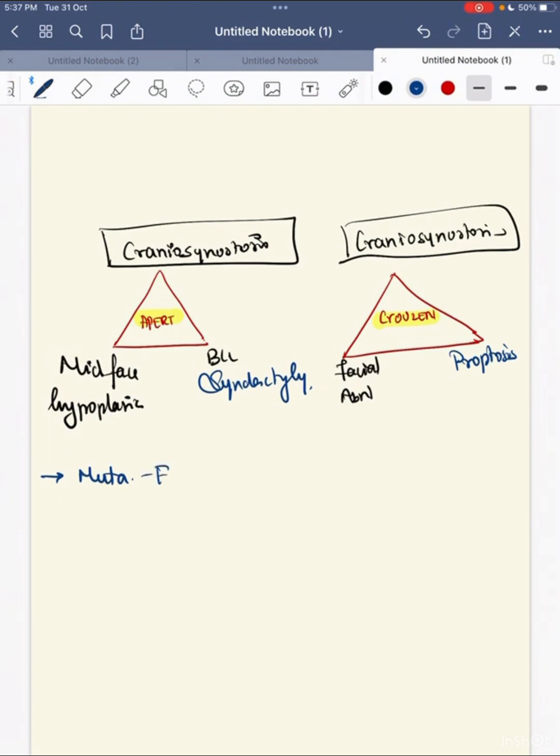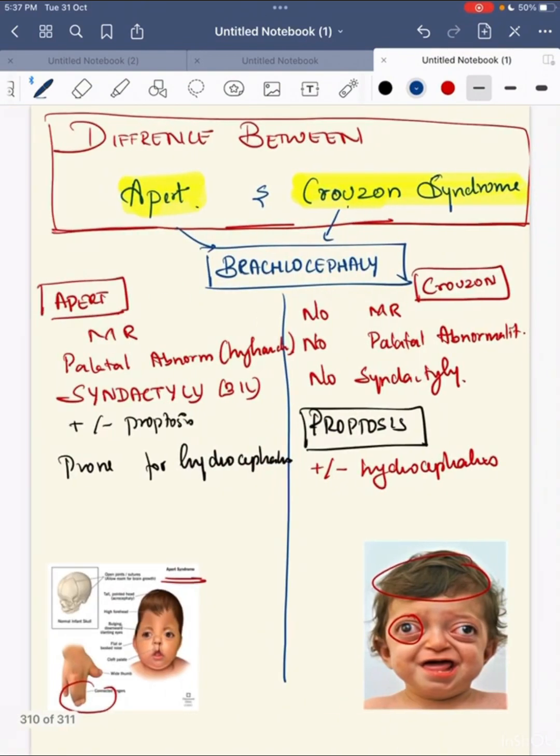What is the mutation involved in Apert and Crouzon? The mutation involved here is FGFR gene 2. In Crouzon syndrome, it is FGFR 2 and 3. So mutation involved is in fibroblast growth factor receptor 2 and fibroblast growth factor receptor 2 and 3 in Crouzon syndrome.